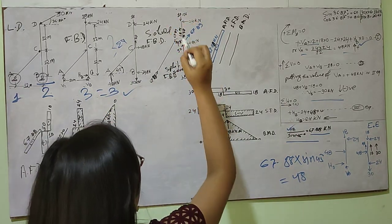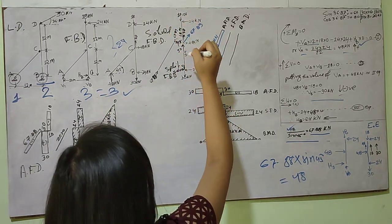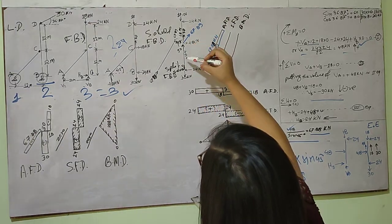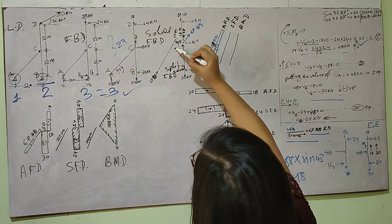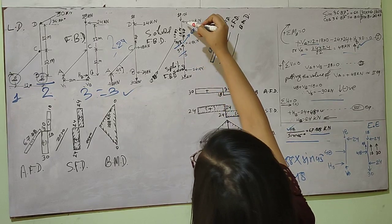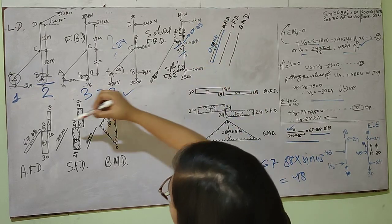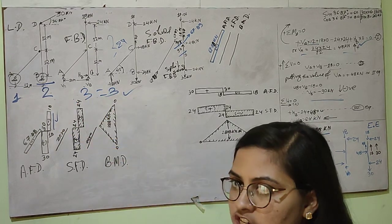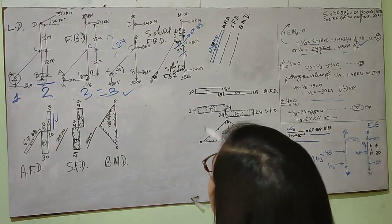This 18 kilonewton load is acting downward, 48 kilonewton load is acting upward. So in order to balance it, I need 30 kilonewtons upward and remaining 18 kilonewtons upward. It is giving compression, as you can clearly see. The axial force diagram shows compression, which is negative - I have assumed compression as negative and tension as positive.